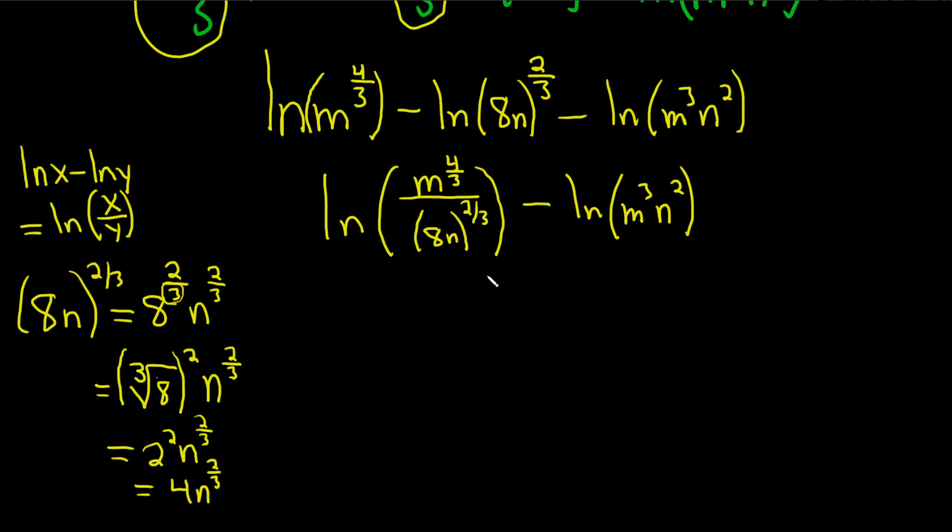That feels much better than this. Let's rewrite it. Natural log of m to the four-thirds over 4n to the two-thirds. And that's minus the natural log of m cubed n squared.